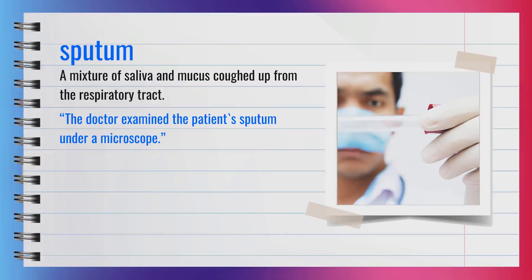The word sputum, spelled S-P-U-T-U-M, is a noun pronounced 'sputum.' Sputum is a mixture of saliva and mucus coughed up from the respiratory tract. You might also hear it referred to as phlegm. For example, the doctor examined the patient's sputum under a microscope. In recap, sputum is a mixture of saliva and mucus from the respiratory system.